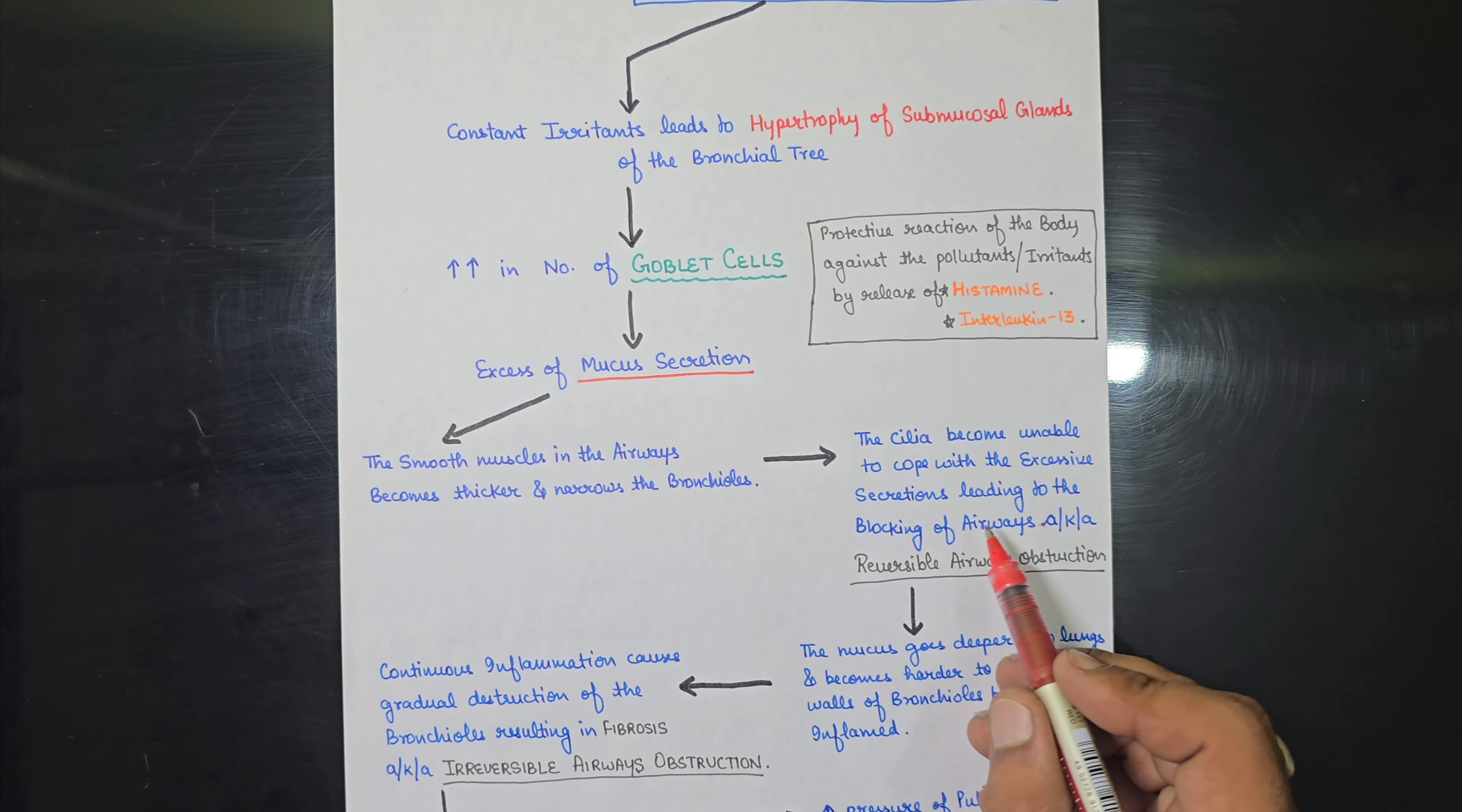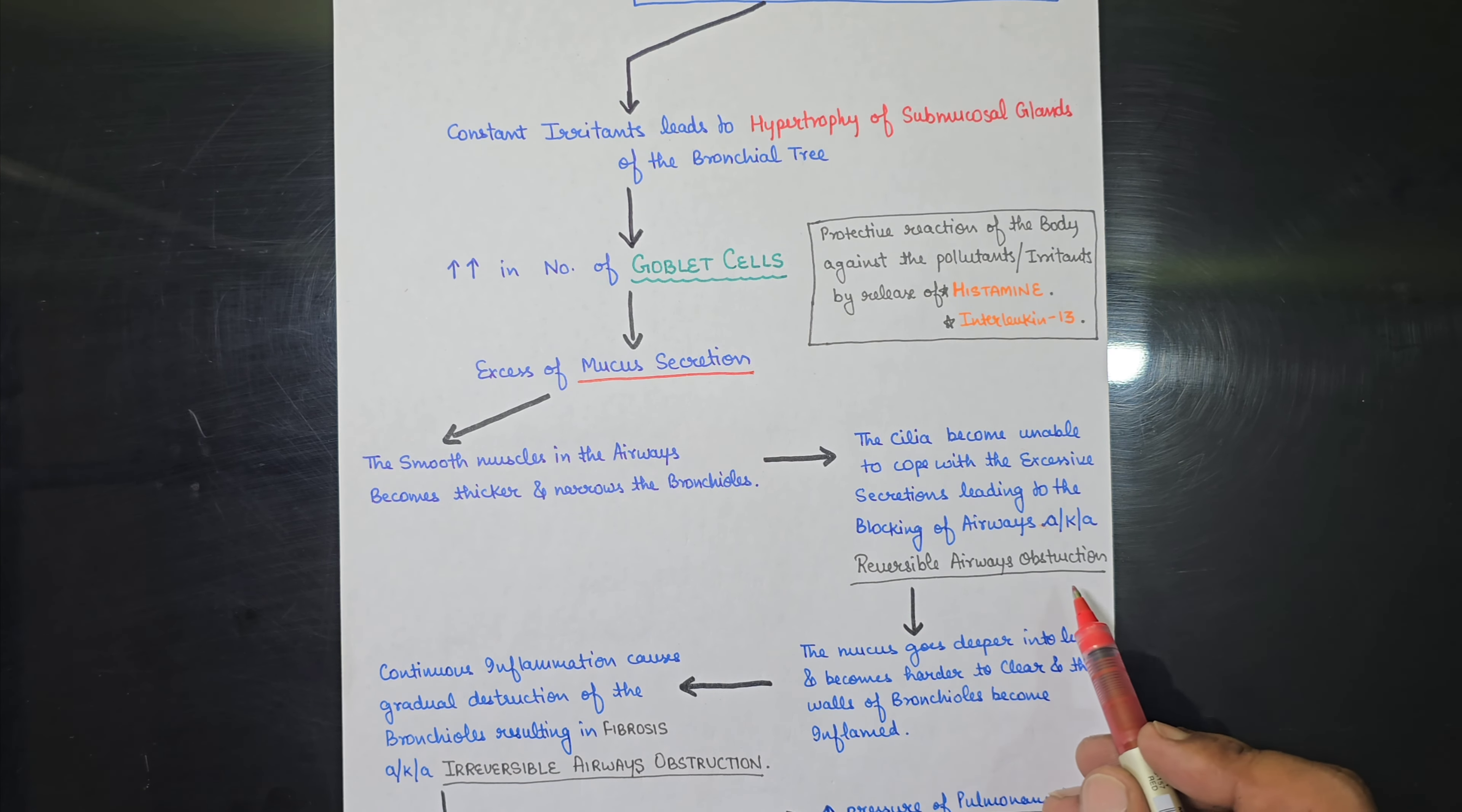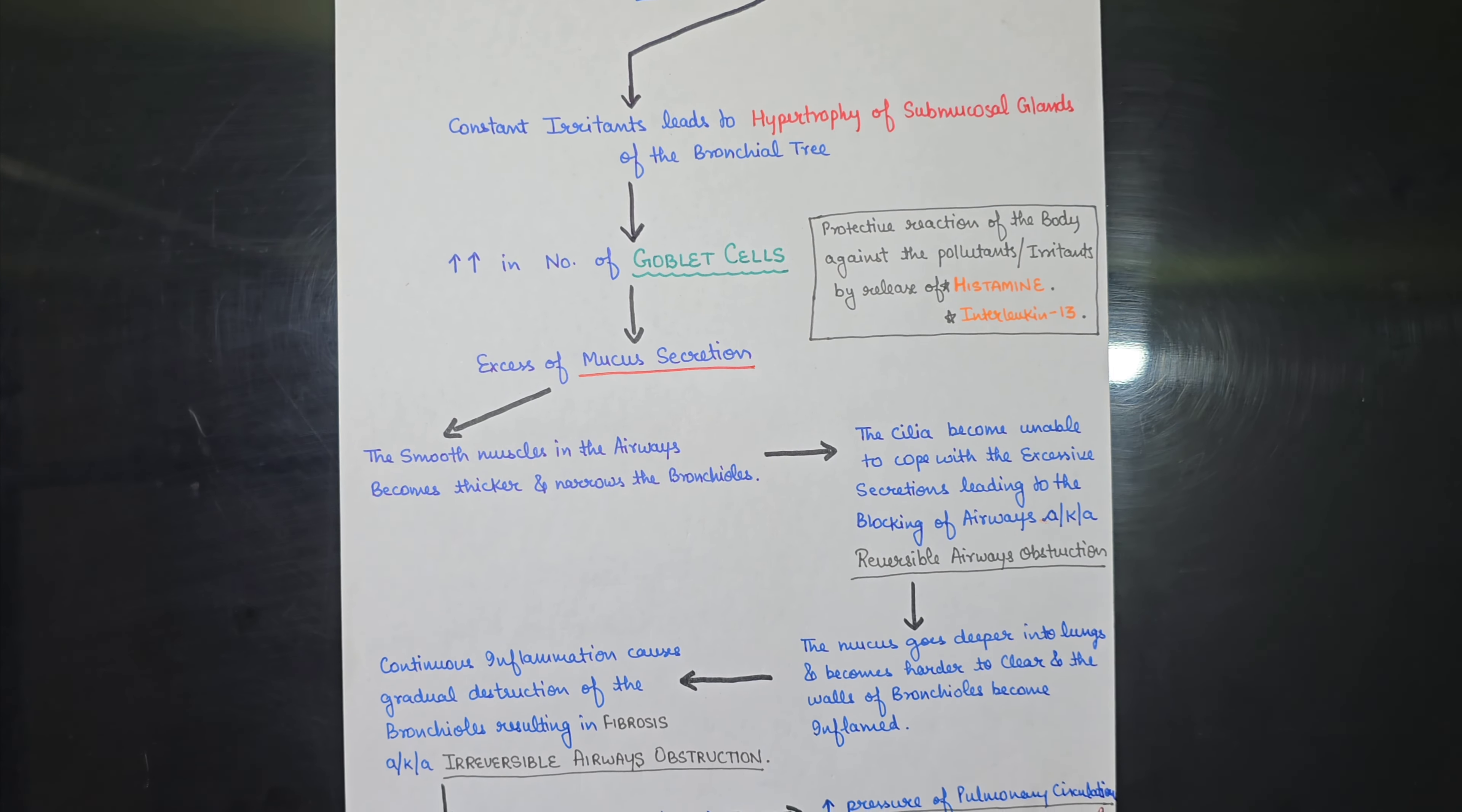So when the bronchioles are narrowed, the cilia becomes unable to cope with the excessive secretion that will lead to the blocking of airways. So the cilia which are the protective lining in the epithelium, whenever there is hypermucus secretion, it will lead to the blocking of the airways, also known as reversible airways obstruction. So until this point, the whole process is reversible.